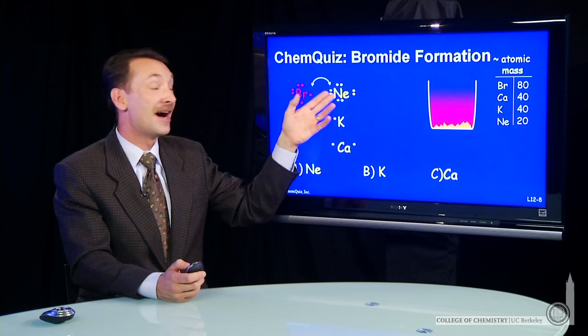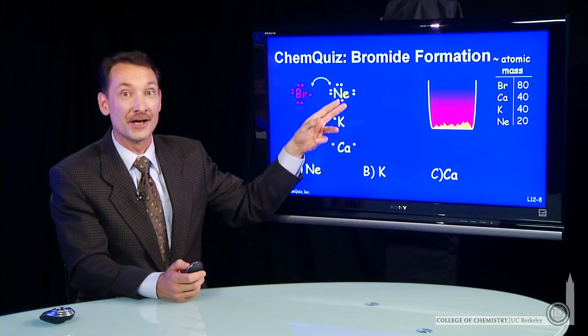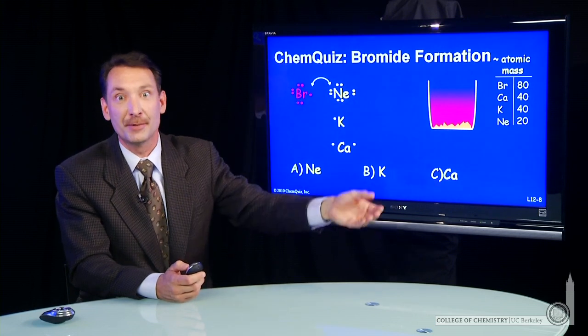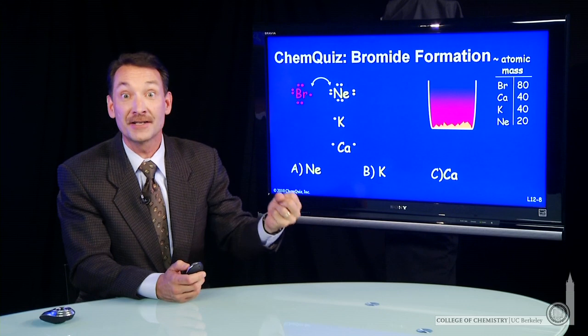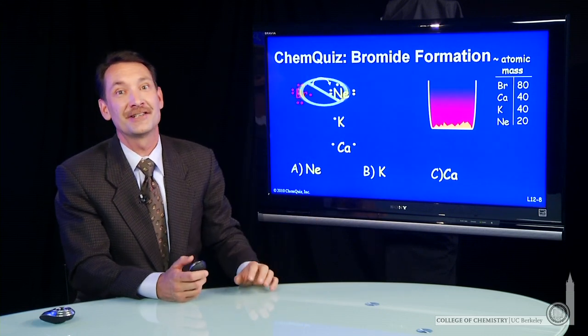And neon, which is a full shell with eight valence electrons, actually has no motivation to either accept or give up an electron. It's relatively stable as it is. So neon bromide actually doesn't even form.